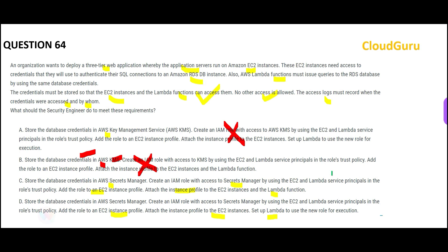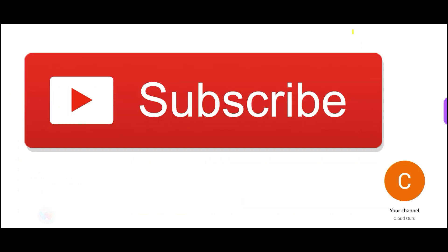No other access is allowed; access logs must record when credentials are accessed and by whom. Looking at option C: you are attaching the instance profile to EC2 instances — but why would you also attach the same EC2 instance profile to a Lambda function? You should set up Lambda separately. That is the difference, and D would be my answer for that reason.